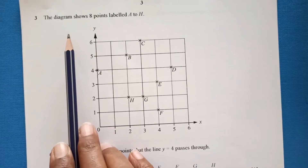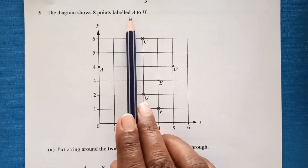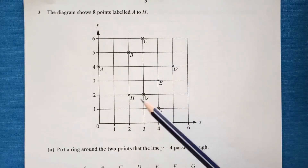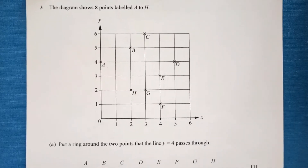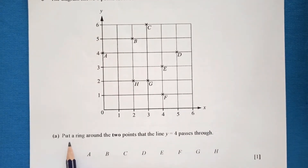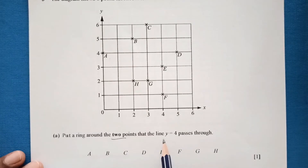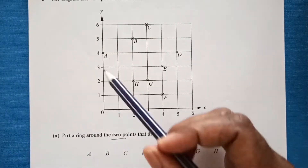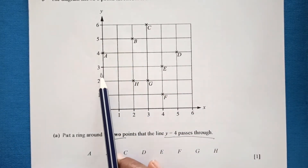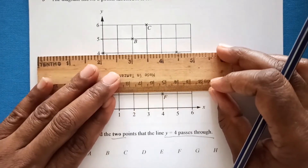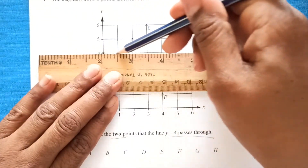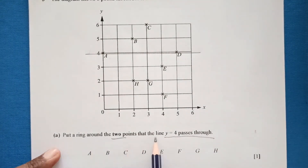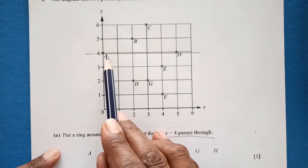Question 3: the diagram shows eight points labeled A to H. Part a: put a ring around two points that the line y equals 4 passes through. This is the y-axis; y equals 4 is here. We draw a horizontal line at y equals 4, and on this line we have point A and point D.